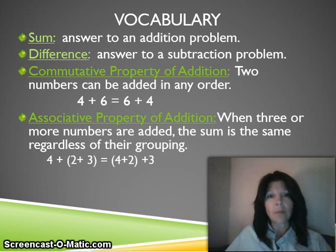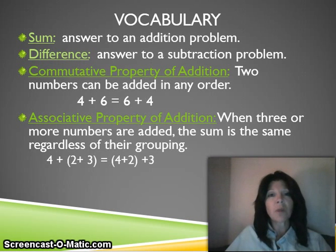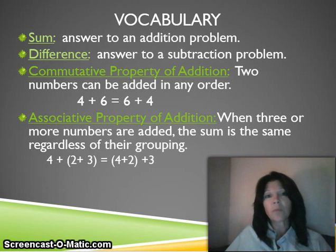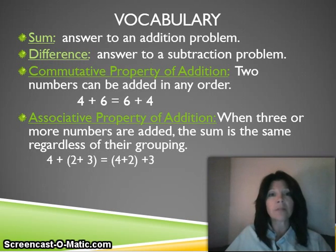Your first vocabulary word is sum — the answer to an addition problem. Your second vocabulary word is difference, which is the answer to a subtraction problem. Your third vocabulary term is the commutative property of addition, which simply means that two numbers can be added in any order. So four plus six equals six plus four — the answer is going to be the same regardless of the order.